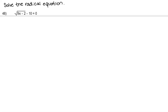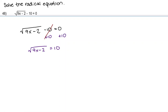The first thing we want to do is isolate that radical, so we can try and get rid of it. We're going to add 10 to both sides to eliminate the 10 from the left side. Then, to get x by itself, we first have to get rid of the radical above 9x minus 2, so we're going to square both sides — squaring it will get rid of the radical, leaving us with 10 squared on the right side.